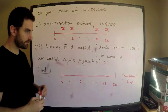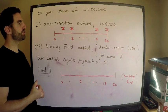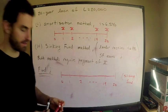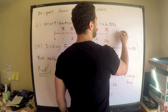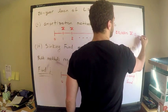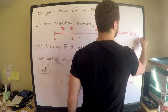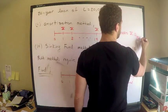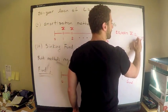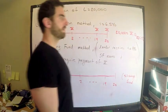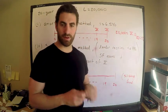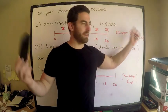Under the amortization method I'm making annual payments on my loan, and those must be X. I can write the equation: the loan amount is equal to X times the present value annuity factor for 20 years at 6.5% interest. This is just an annuity immediate. The loan amount is $20,000, so I have all the ingredients to solve for X.